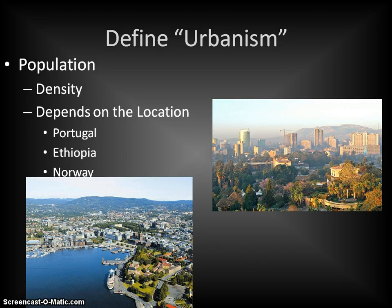Again, it is going to depend on where we are in the world as far as how urban is specifically defined. For instance, in the country of Portugal, an urban area is a place that has at least a population of 10,000 people. In Ethiopia, it's a place with a population of at least 2,000 people. Whereas in Norway, it's where we have a population of at least 200 people. So this understanding of what it means to be urban by definition is going to change depending on where we are in the world.